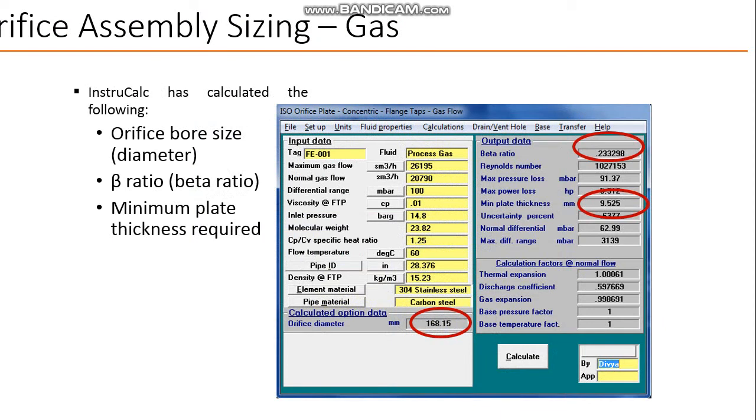After that, you want to calculate the orifice bore diameter D and beta ratio beta, and minimum plate thickness required.